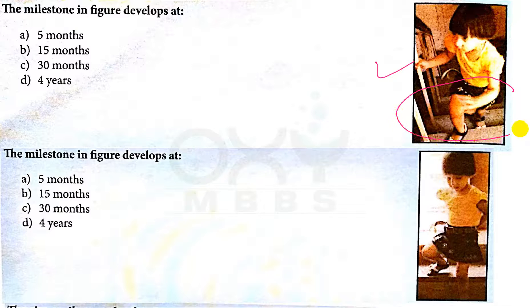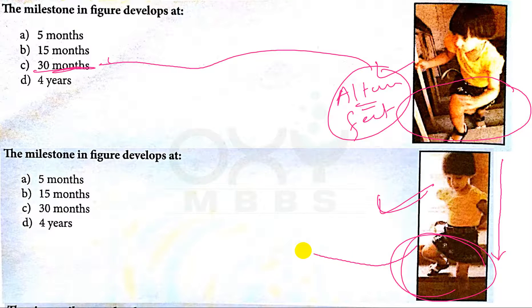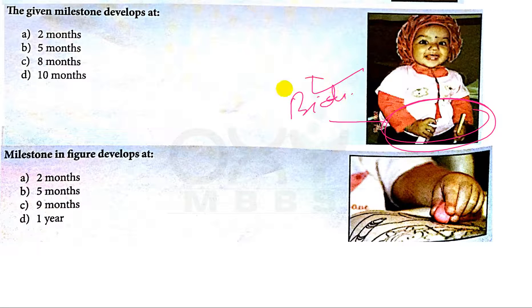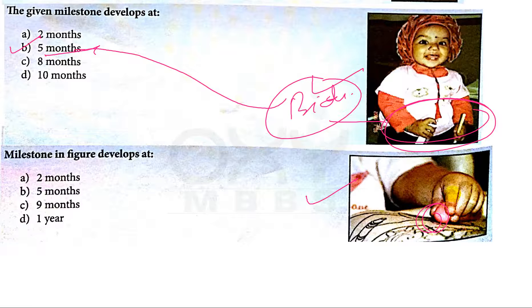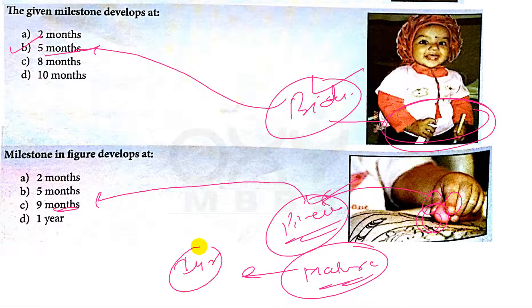Now in this picture, the child is climbing up stairs with alternating feet, and this is achieved at around 30 months of age. And now in this picture, the baby is going down stairs with alternating feet, which is achieved at around 4 years of age. Now in this picture, the baby is holding an object with both hands — this is the bidextrous approach, achieved at around 5 months of age, so B is the correct answer. And in this picture, the baby is holding an object with the index finger and thumb — that is pincer grasp. Immature pincer grasp is achieved at around 9 months of age and mature pincer grasp at around 12 months of age.